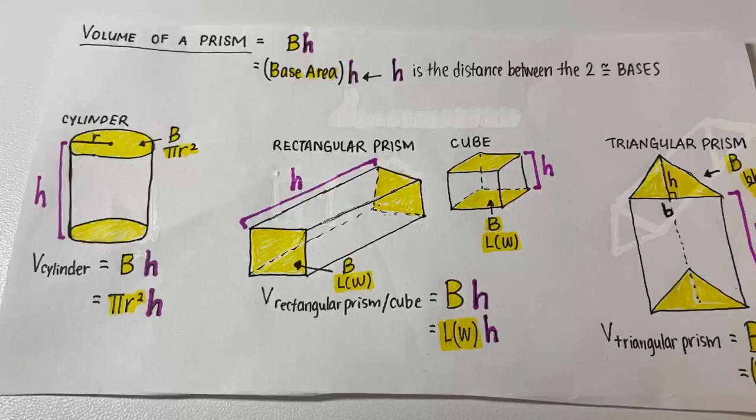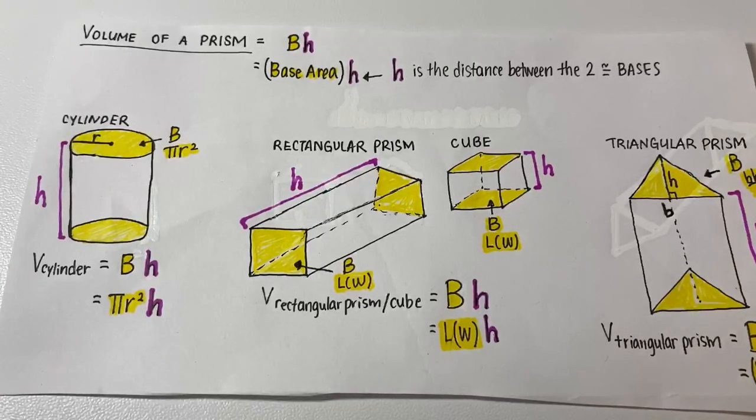Volume of a cylinder: pi r squared times H.